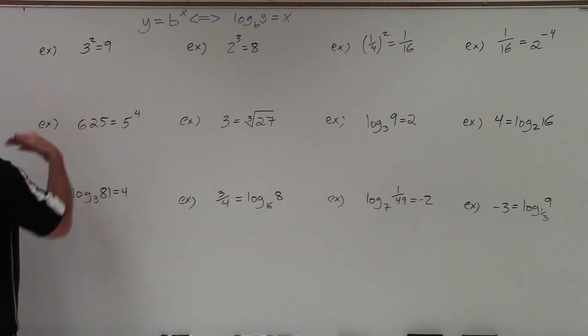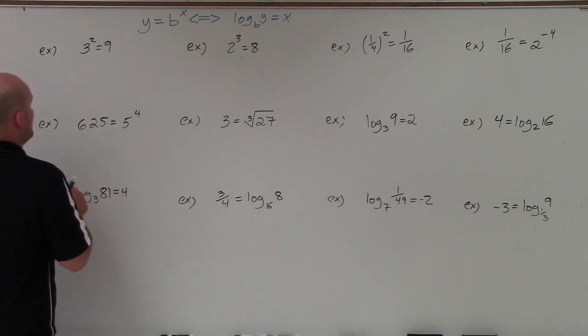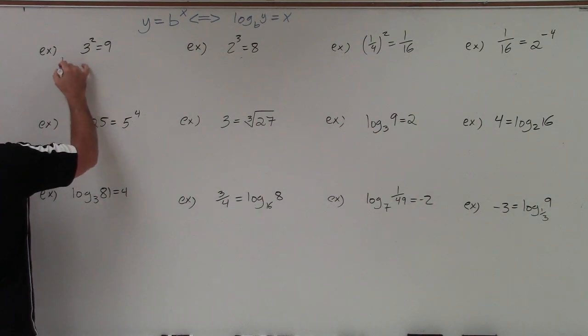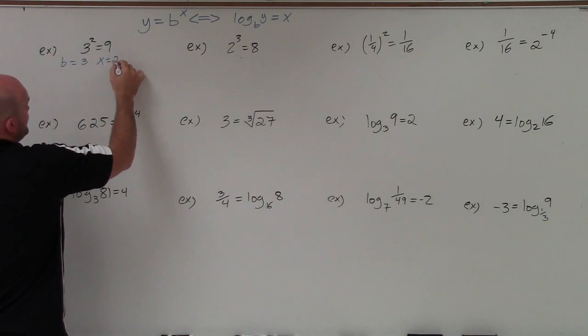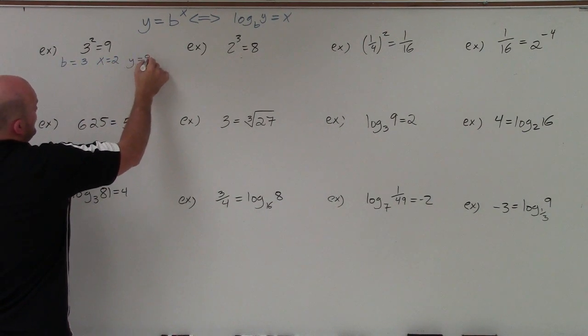So if you're having a little trouble, you're just in the start, we can just write everything out as far as what they represent. So we can say b, in this case, is 3, x is equal to 2, and y is equal to 9.